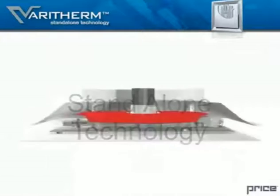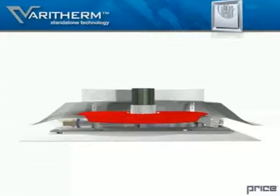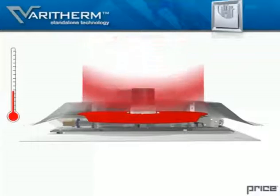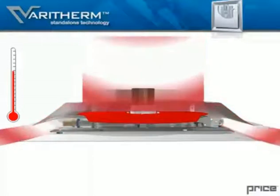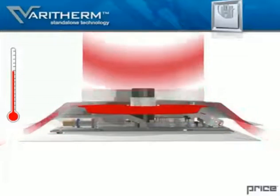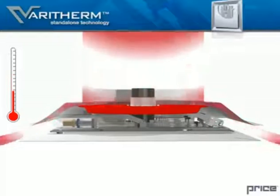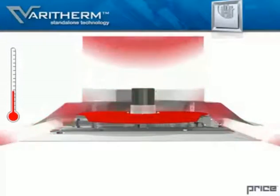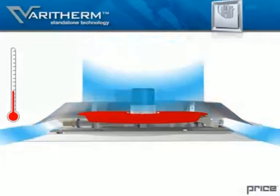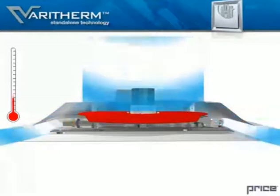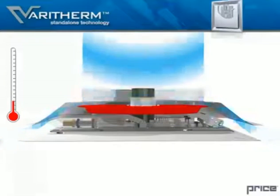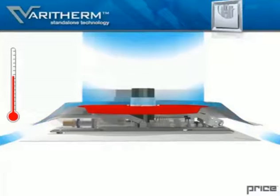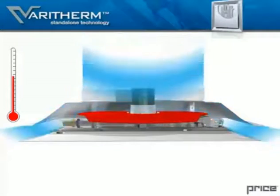Stand-alone technology: The Price Varitherm uses built-in thermal actuators that monitor supply and room air temperature and adjust an integral damper to vary the flow of conditioned air to the space. In heating mode, an increase in the room temperature beyond the room set point will cause the diffuser to decrease the amount of air delivered to the space, and a decrease in temperature beyond the room set point will cause a corresponding increase in air delivered to the space. In cooling mode, air induced over the thermal actuators will cause the damper to close as the temperature in the zone decreases, reducing the amount of cool air to the space. A rise in the room temperature beyond the room set point will cause a corresponding increase of cool air to the space.